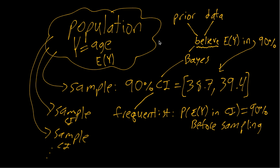So even if we have a CI at the same 90% level and the same numbers, there's still a big difference between the interpretation of those numbers from the Bayesian perspective and the interpretation from the frequentist perspective.